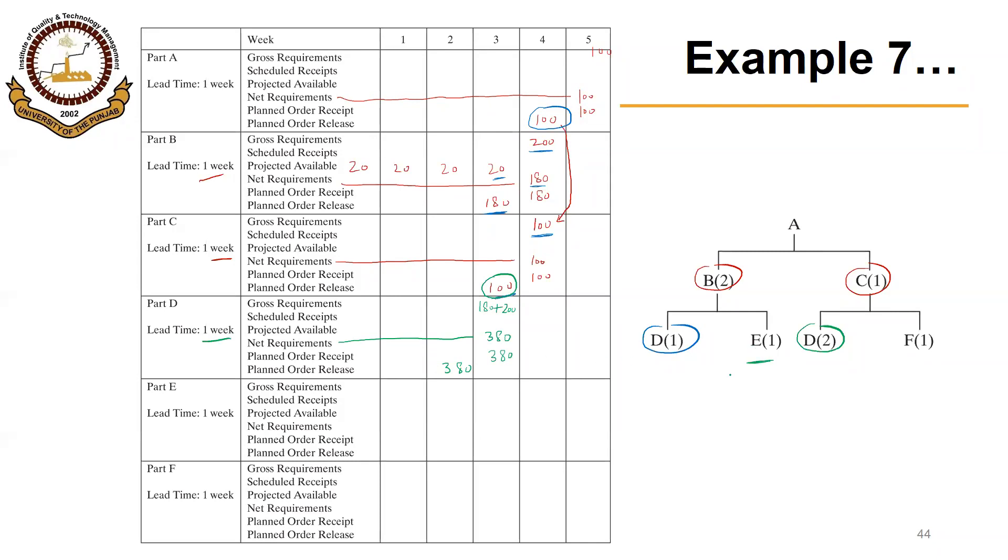E is the component of B. One E is required for each B. So we will have 180 here in week 3. Again, no scheduled receipts, so net requirements of 180, planned order receipt of 180, and planned order release of 180 in week 2.